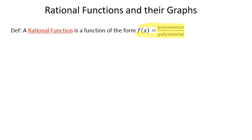So if you have a fraction with a polynomial on top and a polynomial on the bottom, we call this a rational function. The focus of this video is entirely on functions that look like this — they're a fraction with a polynomial on top and a polynomial on the bottom.